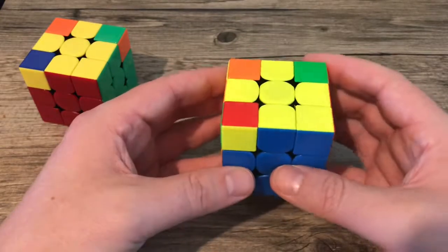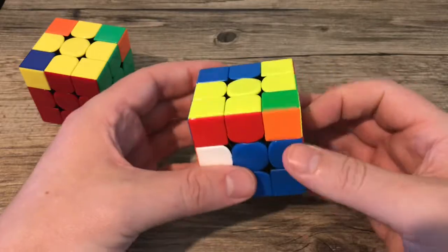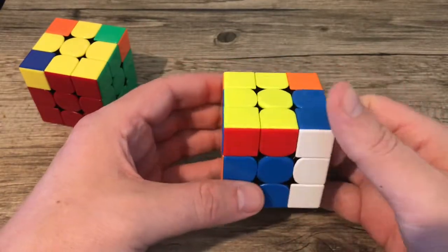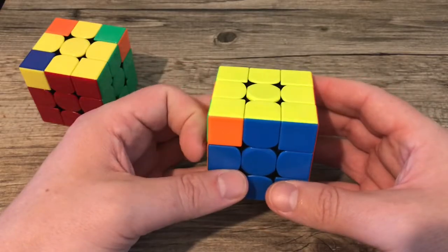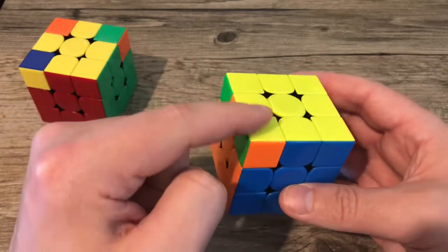The move is very straightforward. Left side up, push towards it. Right side up, push towards it. Left side down, push towards it. Right side down, push towards it. And what that did was it kept that block in the same spot and it cycled those three blocks.